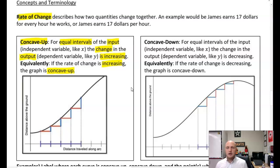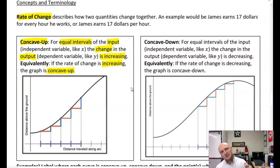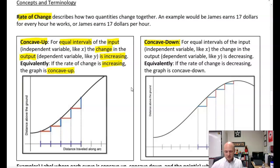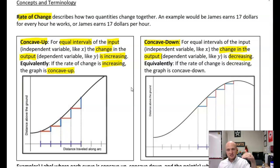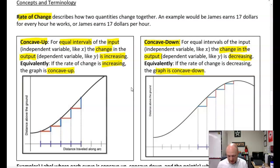So James earns $17 per hour, he gets a raise, now he's earning $17.50 every single hour. What if James got fired? What if he was doing a bad job and then had to go work a different job and was only getting $15 per hour? Well, that would result in a concave down situation. For equal intervals of input, the change in the output is decreasing. This is said to be concave down. Equivalently, if a rate of change is decreasing — how much he's earning every single hour starts to decrease — that would imply that the graph was going to be concave down.